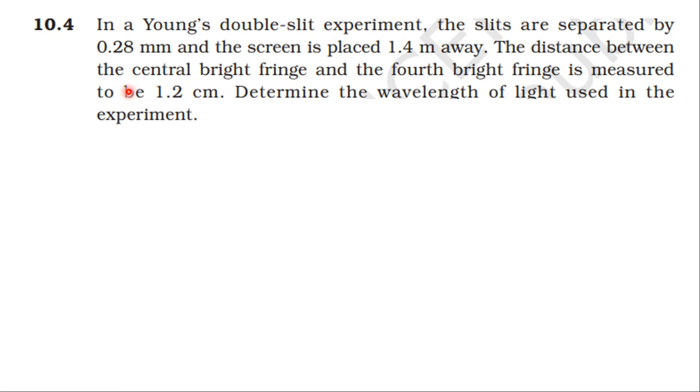From NCERT textbook, we have this topic here in the fourth question. In the Young's double slit experiment, the slits are separated by 0.28 millimeter and the screen is placed 1.4 meter away. The distance between the central bright fringe and the fourth fringe is measured to be 1.2 centimeter. Determine the wavelength of the light used in the experiment.